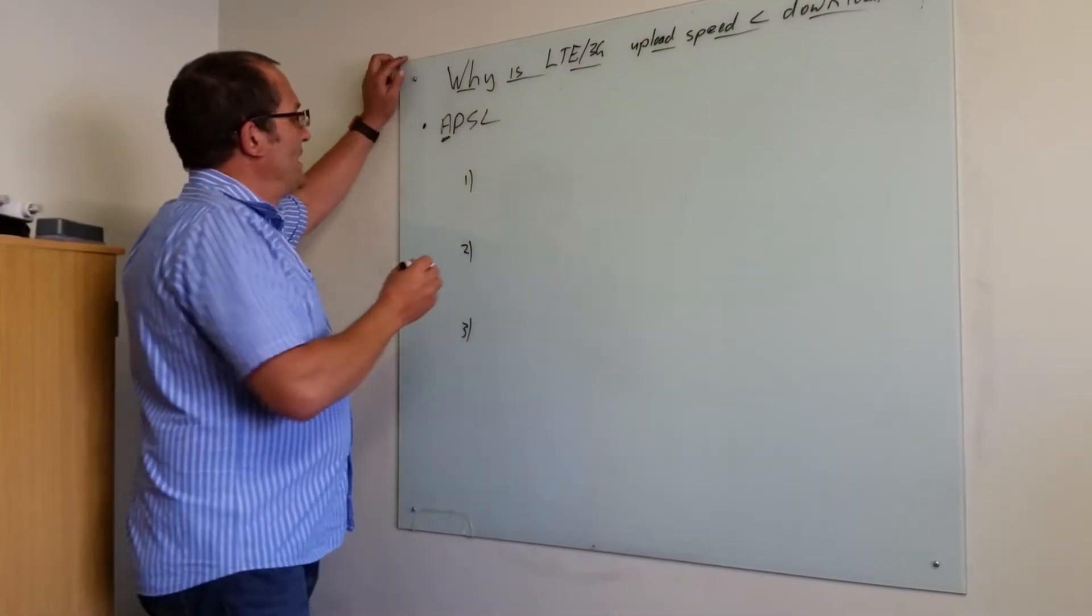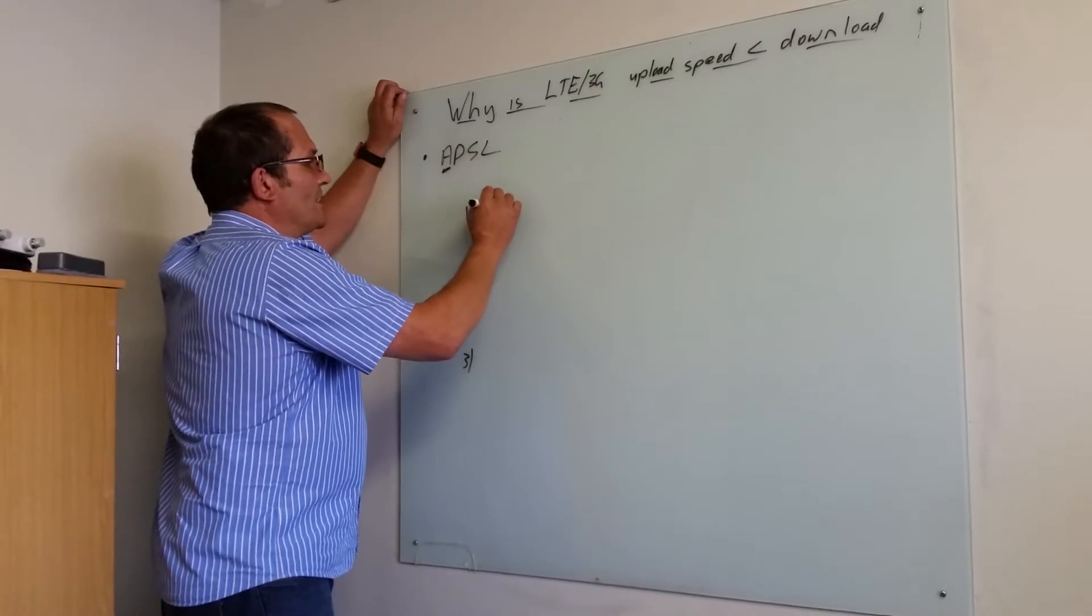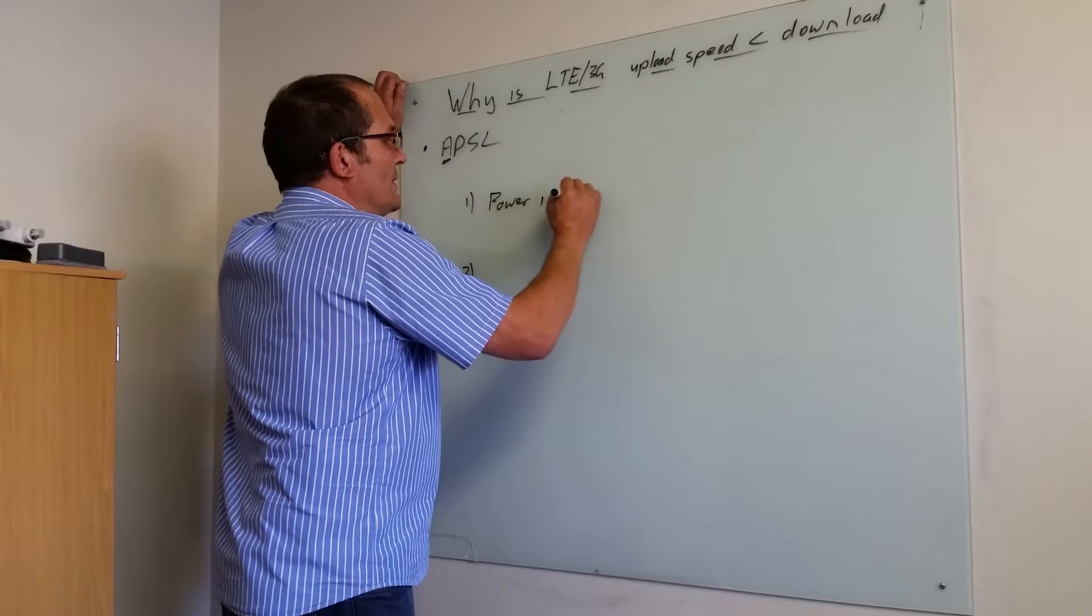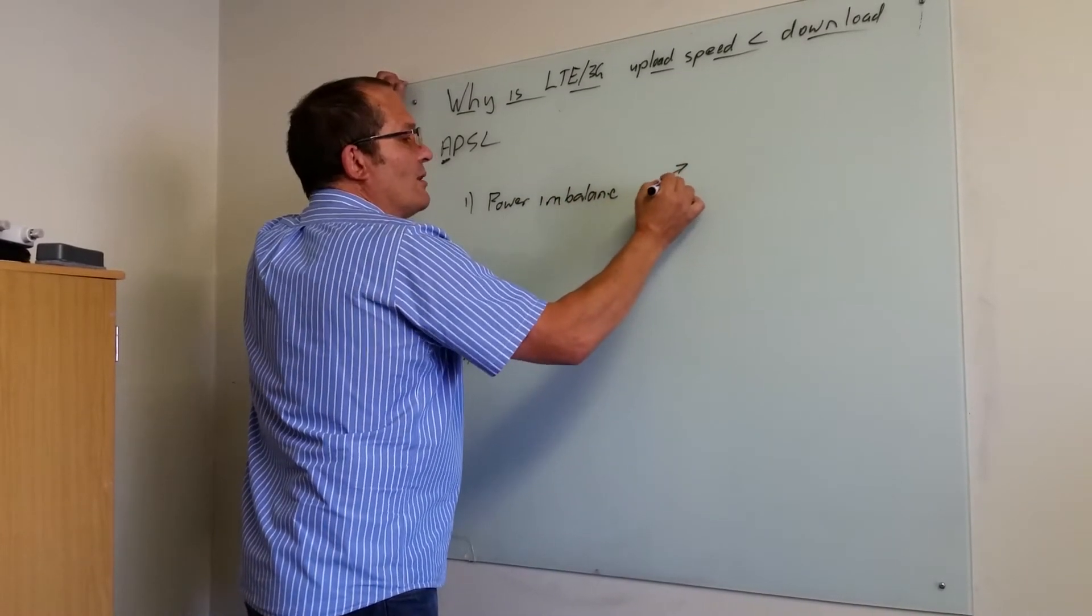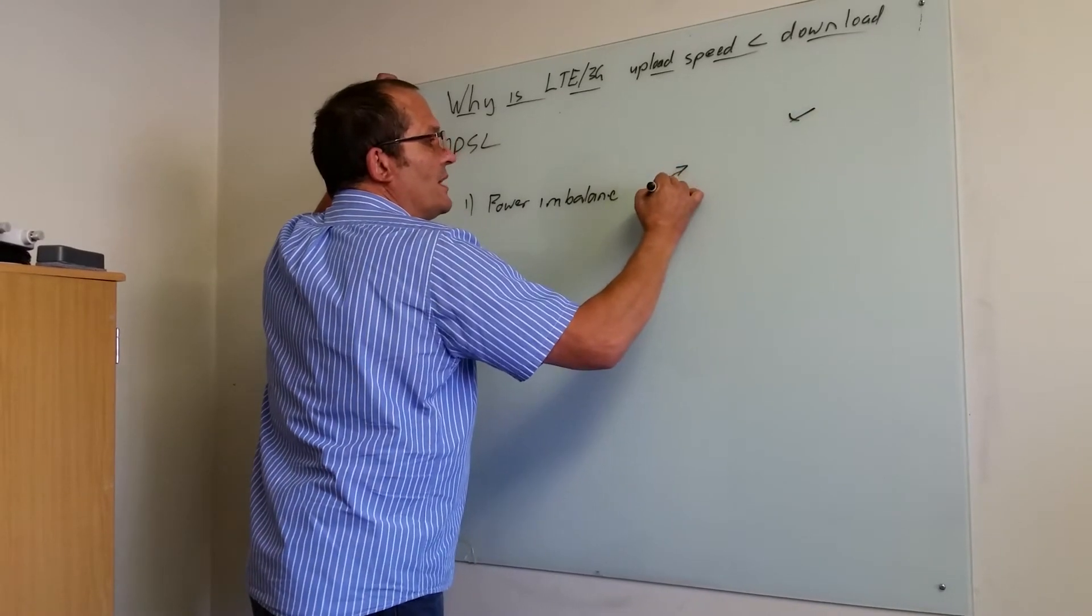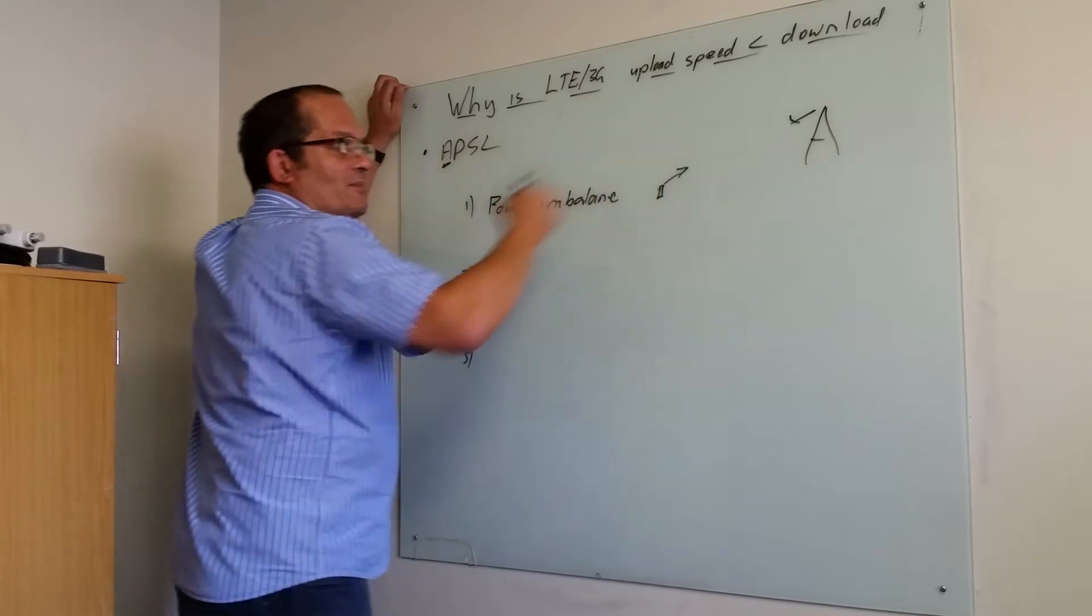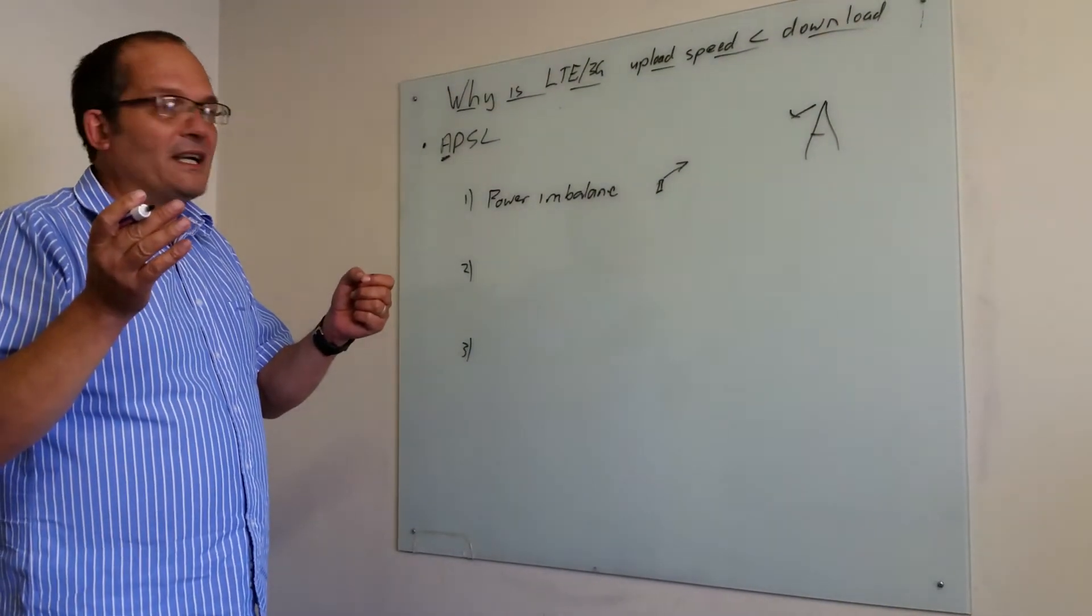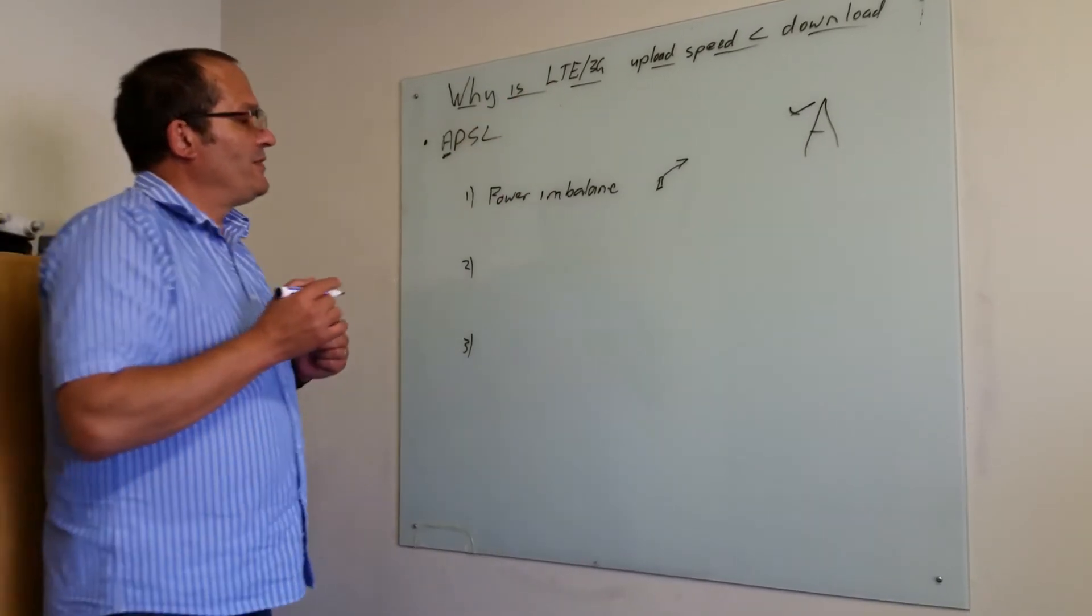The reason why it doesn't happen that easily is the handset power, what we call power imbalance, and that means that the handset has got much lower power than the base station over there. So because it can transmit a much stronger signal, and we said many times before stronger signal means higher data rate, you often find that just the weaker signal going up defeats that object.